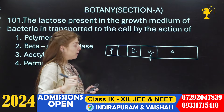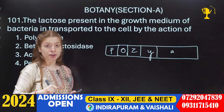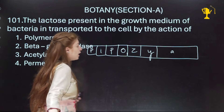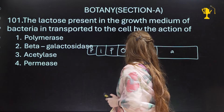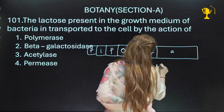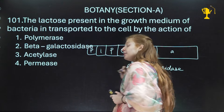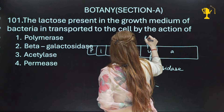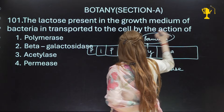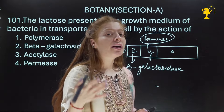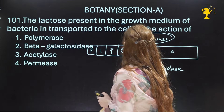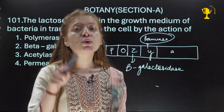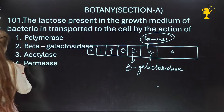There is an operator region, and then there is the i gene which synthesizes the inhibitor/repressor molecule. The z gene codes for beta-galactosidase, the enzyme used for metabolizing beta-galactoside such as lactose. The y gene codes for the enzyme permease, and permease helps lactose get inside the cell. The a gene codes for transacetylase. So the question asked how lactose enters the cell — it is by the action of permease, coded by gene y.